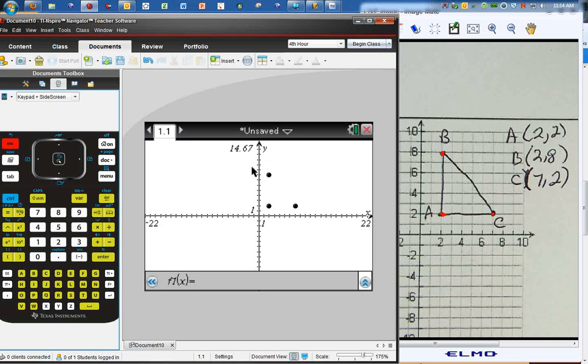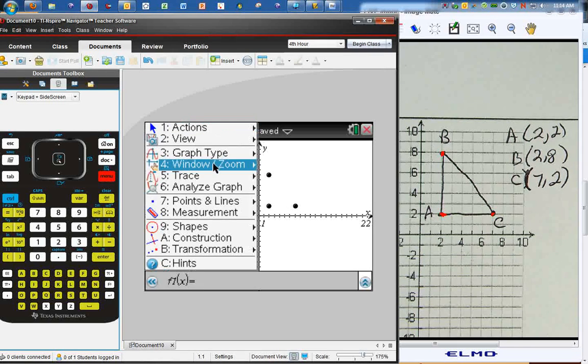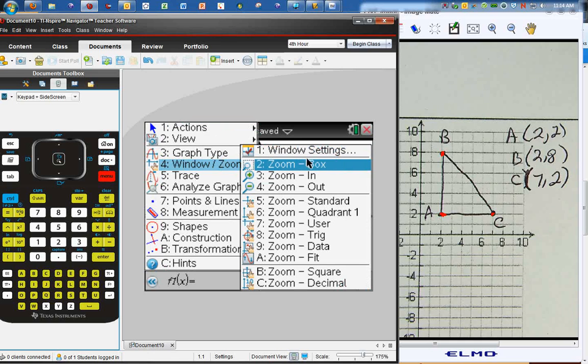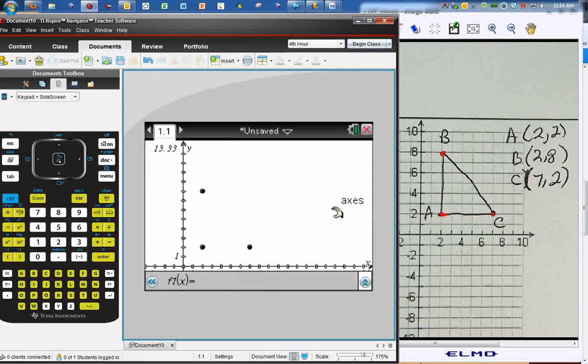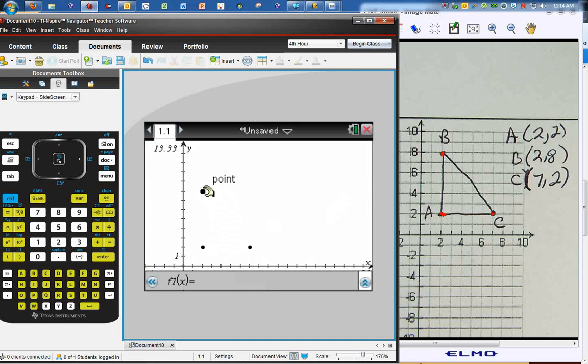But I want to change the window. And since all of the three points that I'm dealing with are in the first quadrant, I'm going to go to menu, go to windows and zoom, and I'm going to move down here to quadrant 1. Hit quadrant 1. There are my three points.